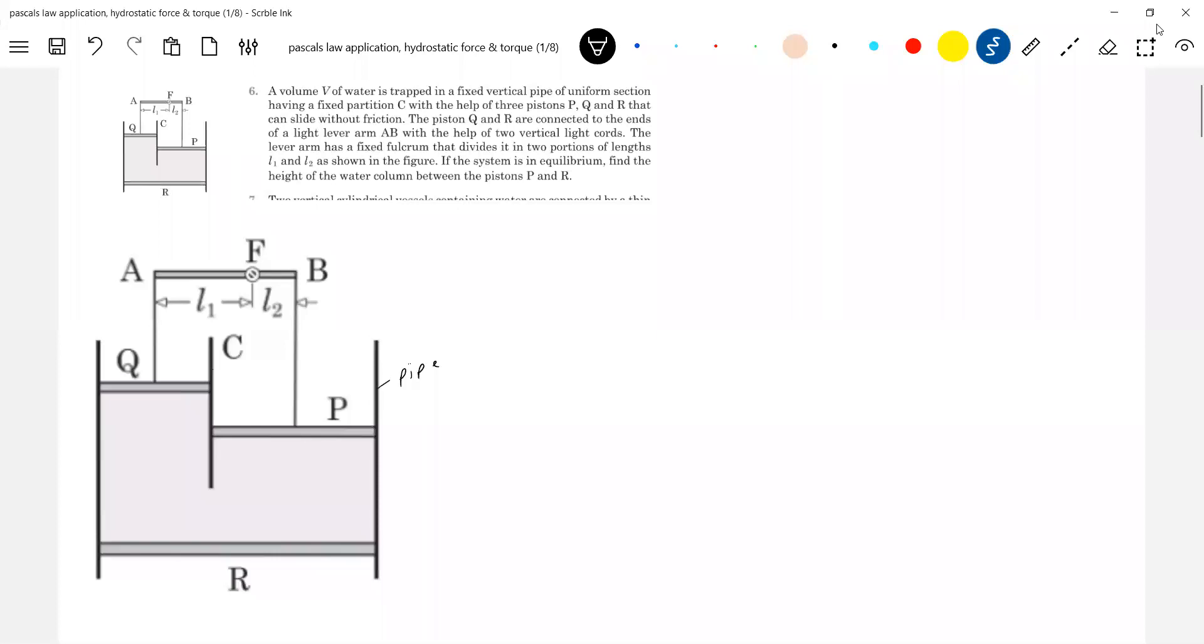See the end. And we'll have three pistons P, Q, and R that can slide without friction. So okay, fine. So there are P, Q, R three pistons. So this is where I see it's fixed. And this is like some fulcrum is there in it.